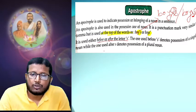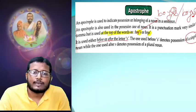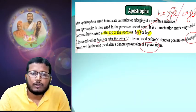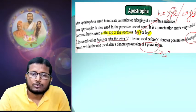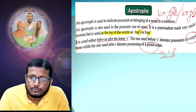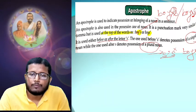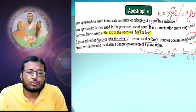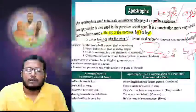The one used before S denotes possession of a singular noun, while the one used after S denotes possession of a plural noun. For singular: comma then S. For plural with S-ending: only comma, no extra S after. So for example 'boys' is plural — I should add only the apostrophe after the S and not write another S.